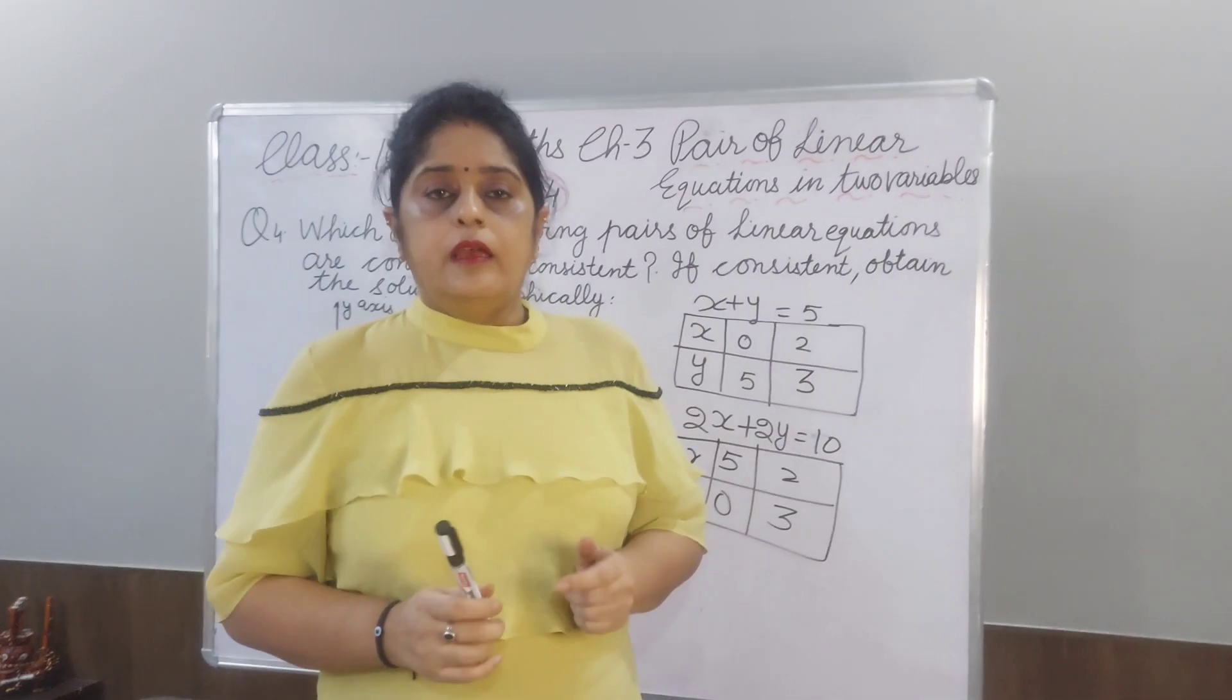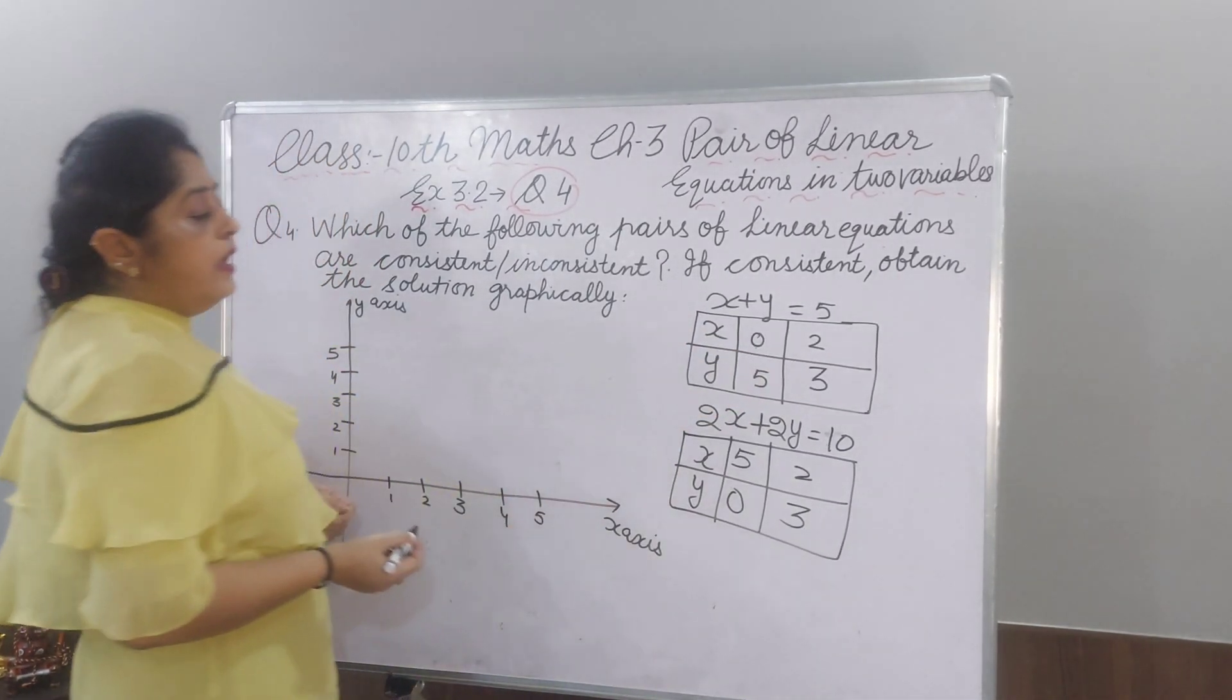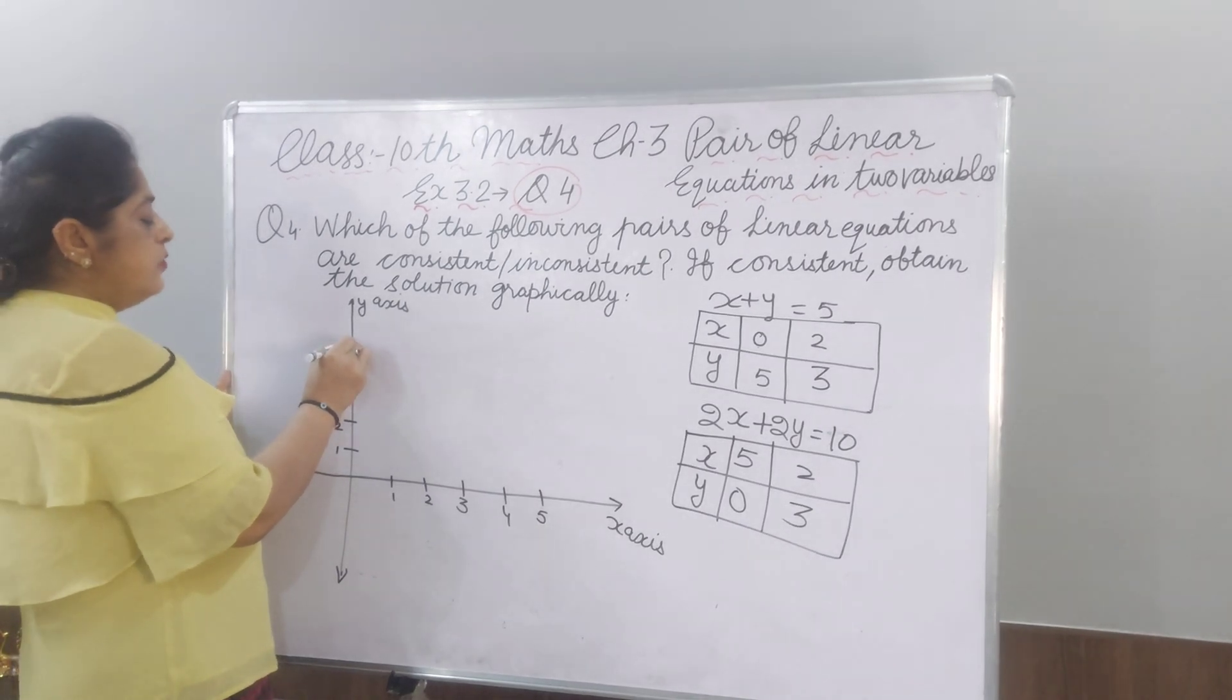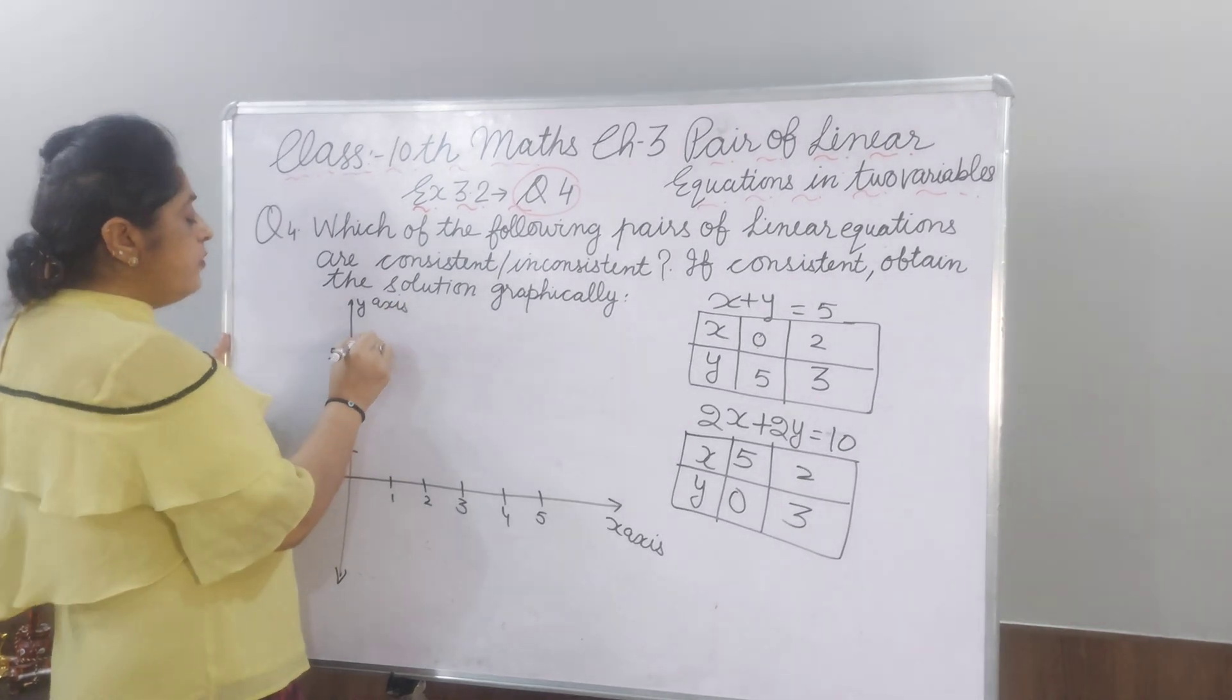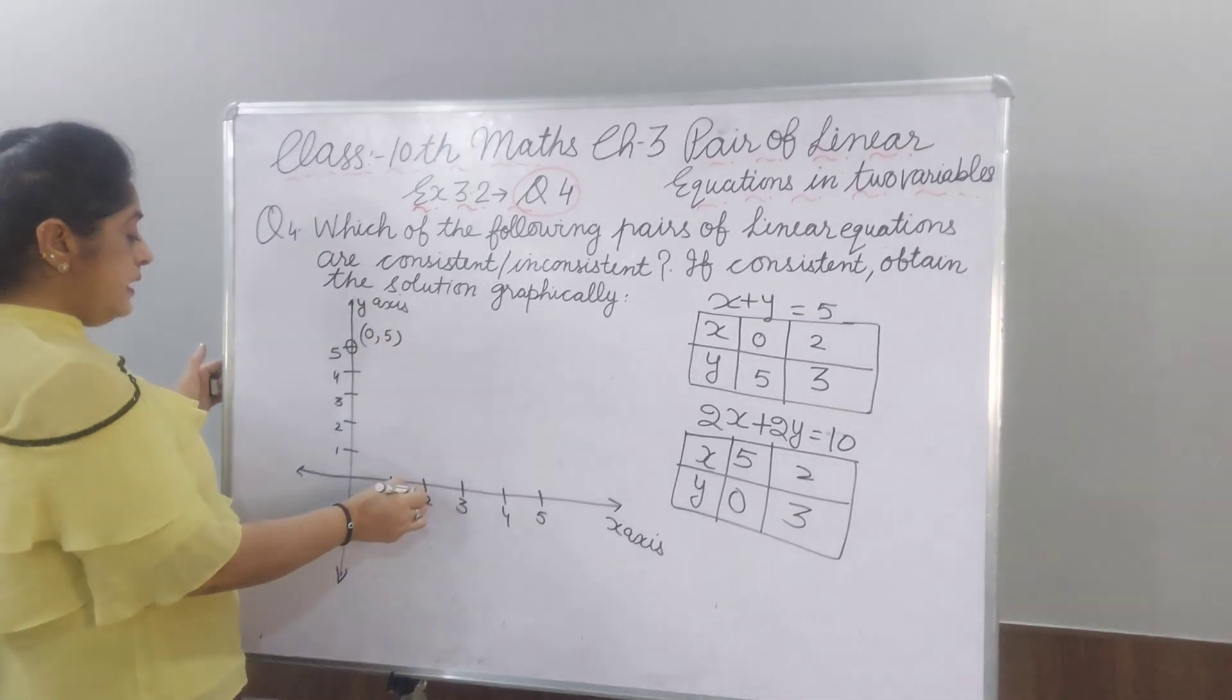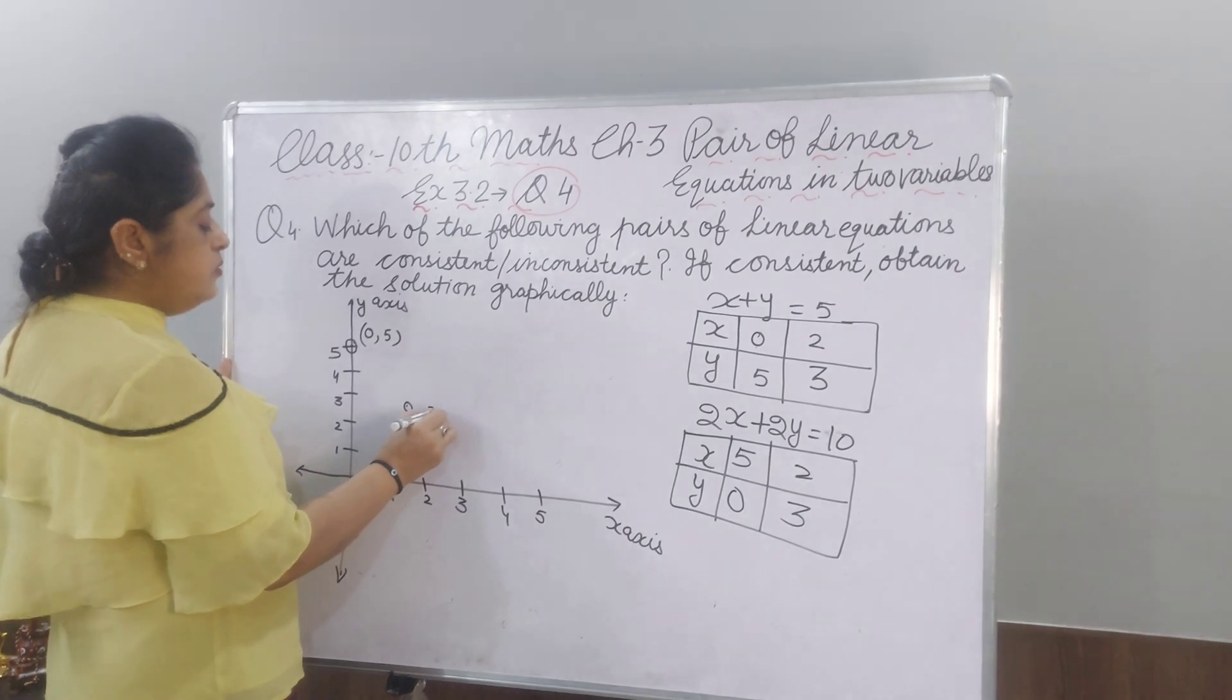Now, we will make graph. Now, I have drawn X axis and Y axis. First, one equation, X value is 0 and Y is 5. When X is 0 on Y axis, here, this point we will get. And you know that first value is X and second value is Y. We will write value here, 0 and 5. Now, X is 2, Y is 3. X is 2, Y is 3. Here we get the point. X is 2, Y is 3.